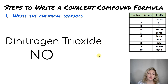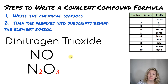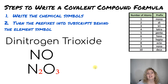Remember, the last element is going to have the '-ide' ending. So don't go looking on the periodic table for 'oxide' — it's not there, but oxygen is. So this is going to be oxygen. Now step two: turn the prefixes into subscripts. 'Di' stands for two, so we put a subscript 2 behind the N for nitrogen. 'Tri' is three, so we put a subscript 3 behind the oxygen. That is how you write the covalent formula for dinitrogen trioxide.